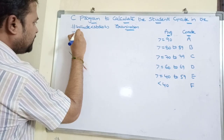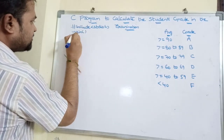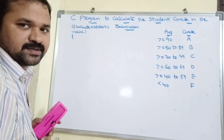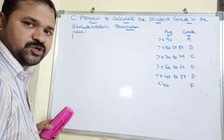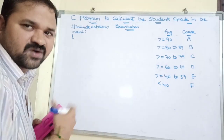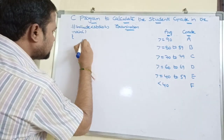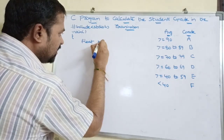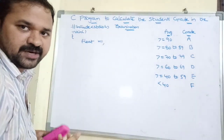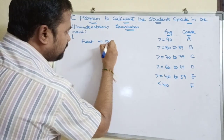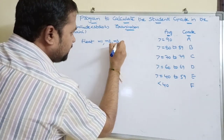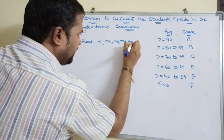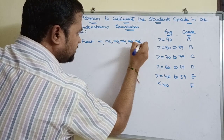Next is the main function — execution of the program starts from main. The marks may be of type float, so we declare float variables. We have six subject marks: M1, M2, M3, M4, M5, M6.